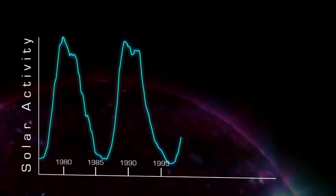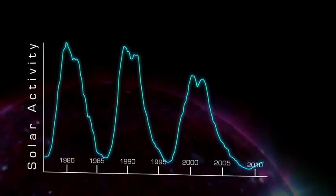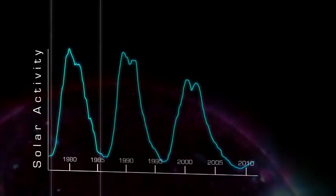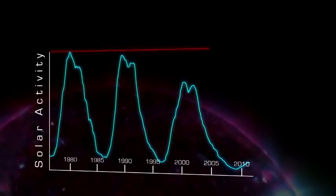This pattern is called the sunspot cycle, and a single cycle lasts for about 11 years, although it can be as short as 8 or as long as 14, and it can vary dramatically in intensity.